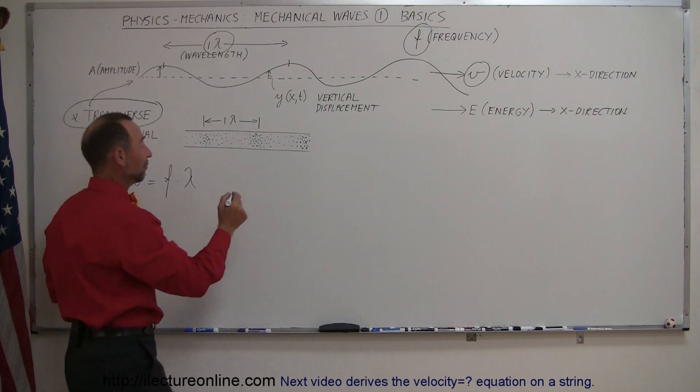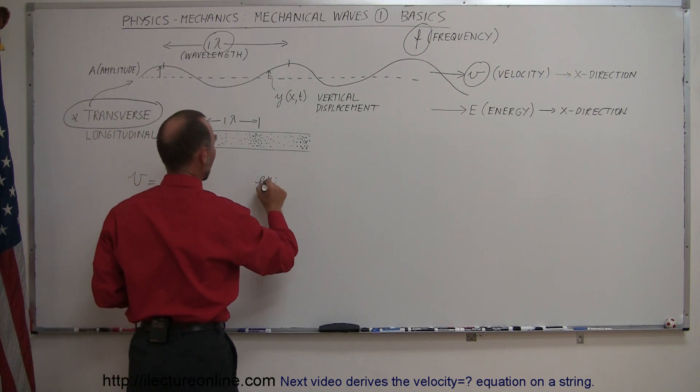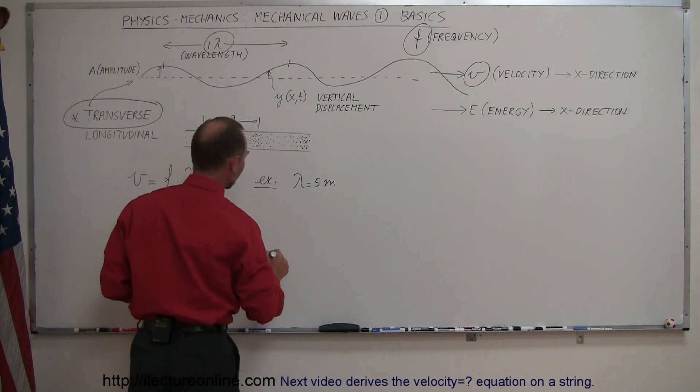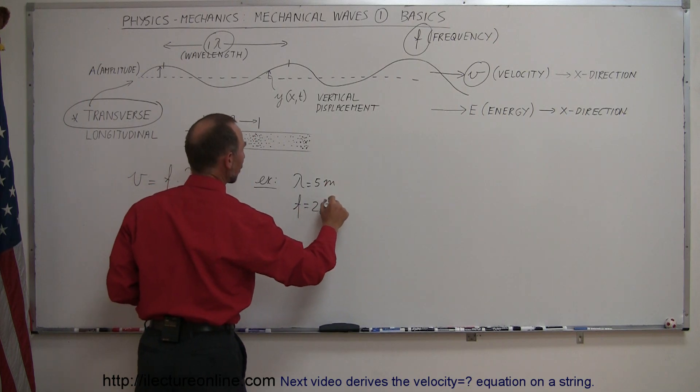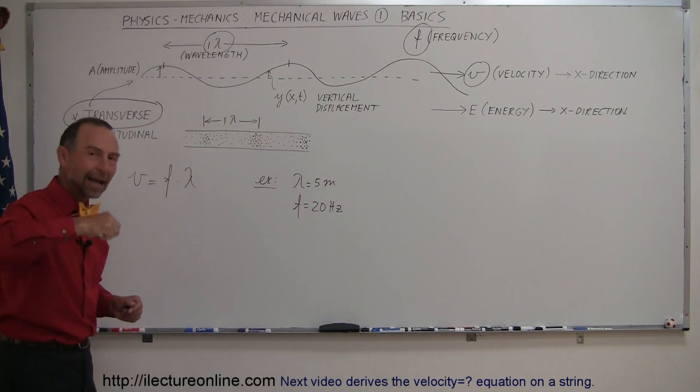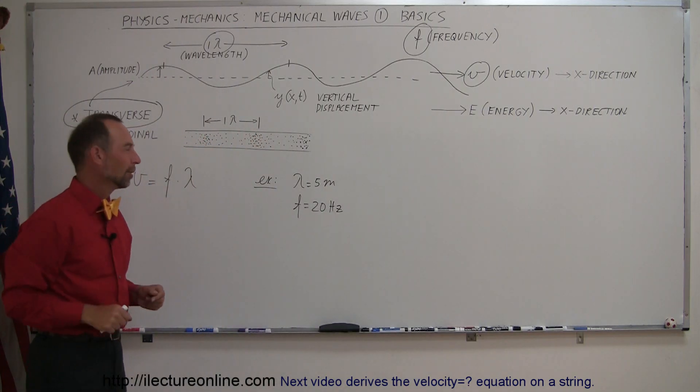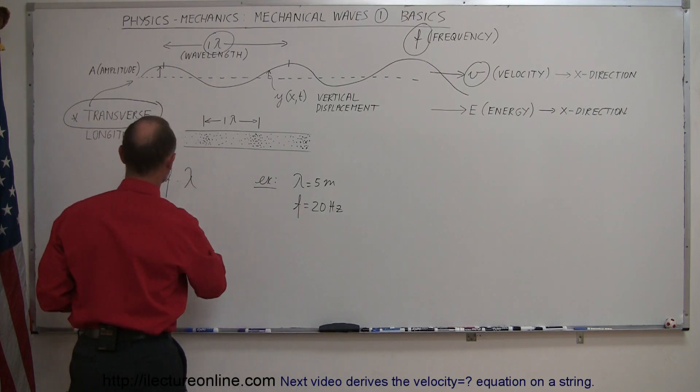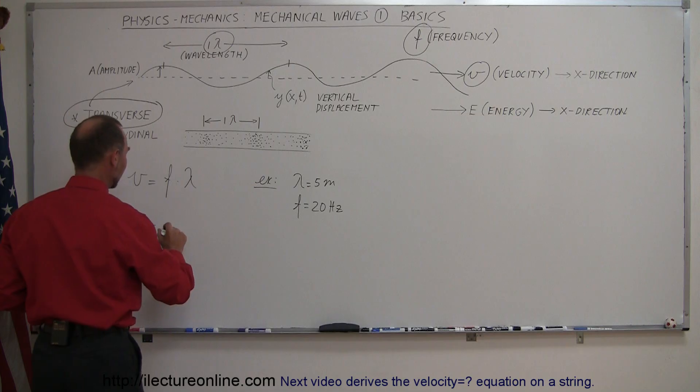Now, if for example, we have a wavelength equal to 5 meters, and let's say that we have a frequency equal to 20 hertz, let's say that we whip the wave up and down 20 times per second, of course that would be hard to do with a hand, that would have to be done with a mechanical device probably, we could then say that the velocity of the wave is frequency 20 hertz.